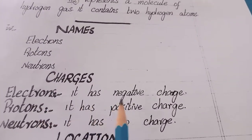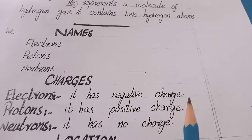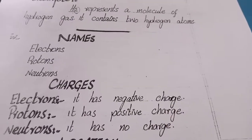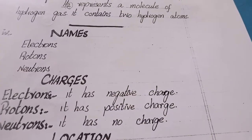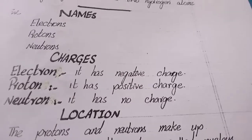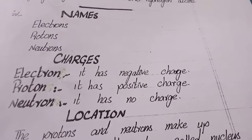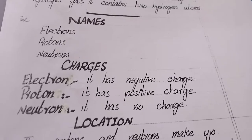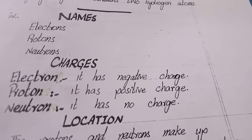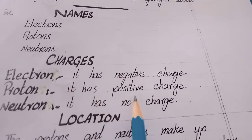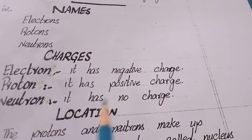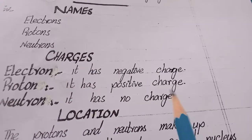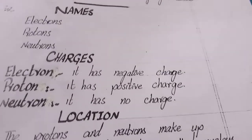Electron has a negative charge. Next, proton has a positive charge. Neutron has no charge — neutron पر कोई charge नहीं होता।